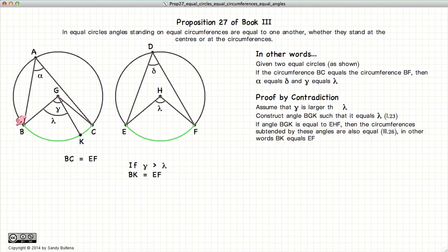Now, if BGK is equal to EHF, then the circumferences are equal according to Proposition 26 of Book 3. In other words, BK is equal to EHF. So we have that BK is equal to EHF.